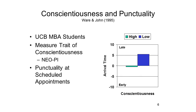Here's an actual example of how this research goes. As part of an ongoing study at the University of California, Berkeley, Ware and John measured the level of conscientiousness in a sample of students in the MBA program at the business school using scales from the NEO personality inventory. They then tracked these students' arrival times at various appointments. Highly conscientious individuals tended to arrive a little early, while those who scored low on the conscientiousness scale tended to arrive significantly later. In this case, a feature of the person — the trait of conscientiousness — predicted a criterion of punctuality.